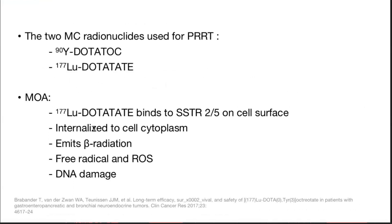There are two most common radionuclides used for PRRT. The first is Yttrium-90 DOTATOC, and the second is Lutetium-177 DOTATATE. At our center, the nuclear medicine colleagues use Lutetium-177. The mechanism of action: it binds to somatostatin receptors on the cell surface, is internalized to the cytoplasm, and emits long-acting beta radiations which generate free radicals and reactive oxygen species, leading to DNA damage.